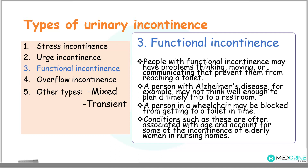The third type of urinary incontinence is functional incontinence. People who have functional incontinence are the ones who have problems either in thinking, moving, or communicating, which prevent them from reaching the toilet. For example, a person with Alzheimer's disease may not think clearly enough to plan a timely trip to the restroom to urinate. A person in a wheelchair, on the other hand, may be blocked from getting to a toilet in time. Most of these conditions are associated with age and account for some incontinence in most elderly women in nursing homes.